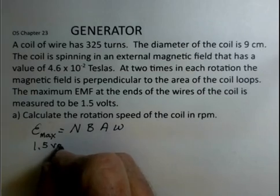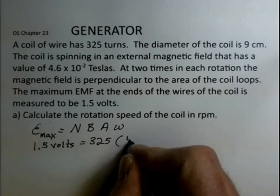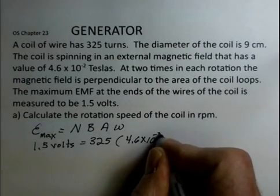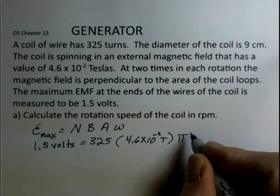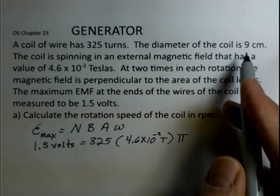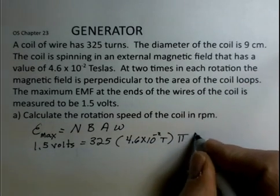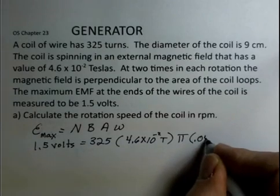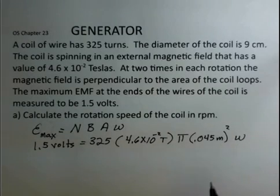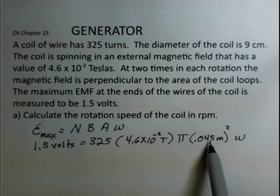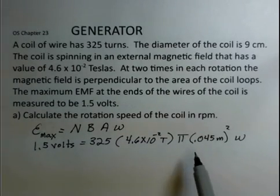1.5 volts, 325 turns of wire, 4.6 times 10 to the minus 2 teslas. The area is a circle. So pi r squared. The diameter is 9 centimeters. The radius is 4.5 centimeters. But we need this in meters, not centimeters. So a little switch there and then the omega. But 4.5 centimeters becomes 0.045 meters. Don't forget the conversion. You need standard metric units along here.